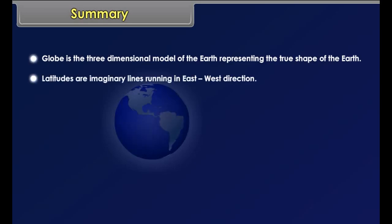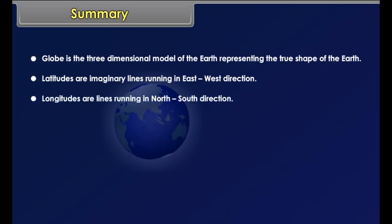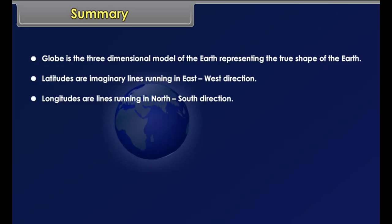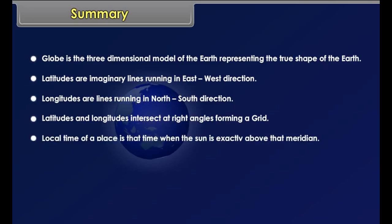The lines of longitude and latitude form a network on the globe. The longitudes and latitudes intersect each other at right angles forming a grid. This network is helpful in locating different places on the map or globe.